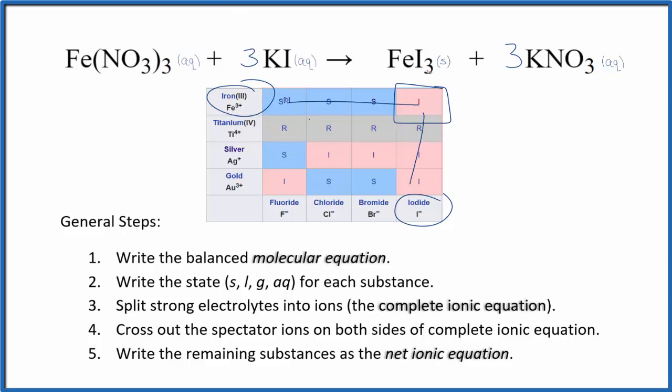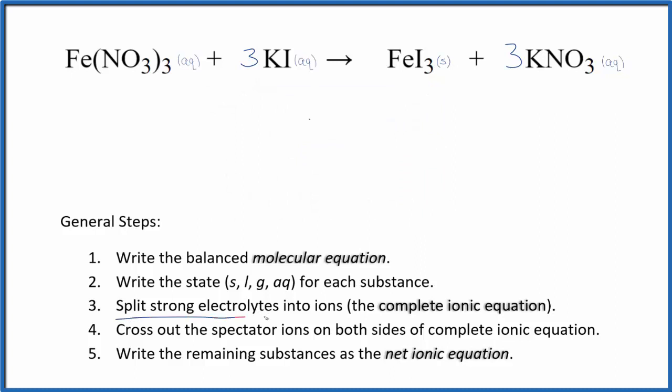So FeI3, that's our solid. That's our precipitate. Next, we'll split the strong electrolytes into their ions for the complete ionic equation. When we do that, this is what we get.